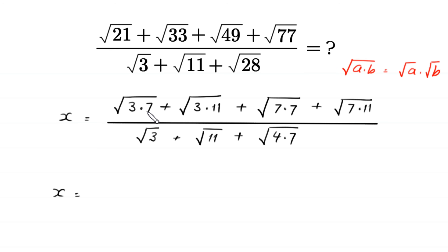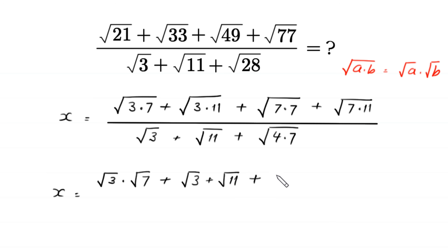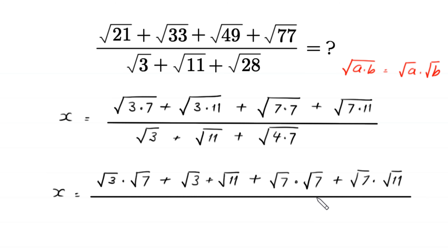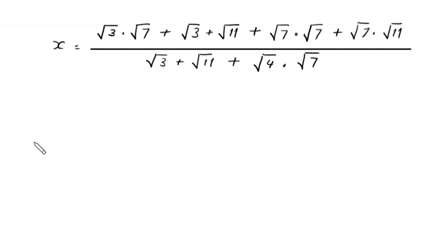By using the property that square root of a times b equals square root of a times square root of b: square root of 3 times 7 becomes square root of 3 times square root of 7, plus square root of 3 times square root of 11, plus square root of 7 times square root of 7, plus square root of 7 times square root of 11, divided by square root of 3 plus square root of 11 plus square root of 4 times square root of 7.